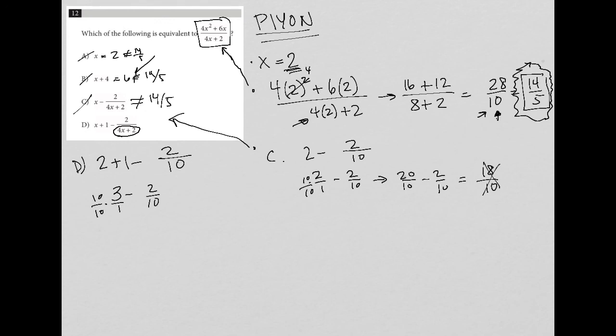So I'd have 30 over 10 minus 2 over 10, which is equal to 28 over 10, which should look familiar.